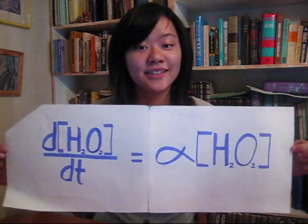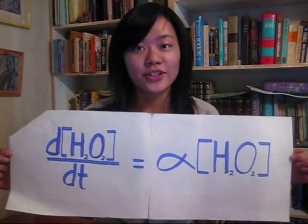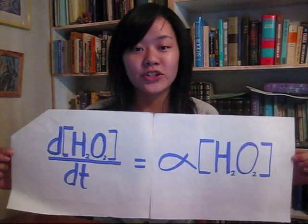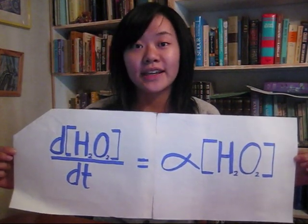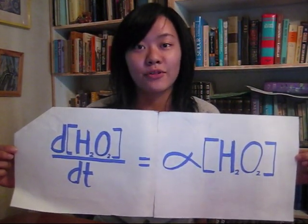Now picture a system where the change depends on the current value, as in a first order kinetic reaction. The rate at which hydrogen peroxide decomposes into water and oxygen is dependent on how much hydrogen peroxide is present. Since this is a single differential equation, we could draw a phase line to show what would happen when we started with any given concentration of hydrogen peroxide.